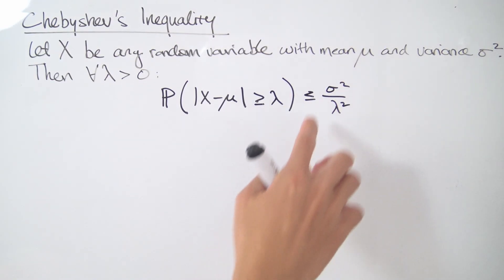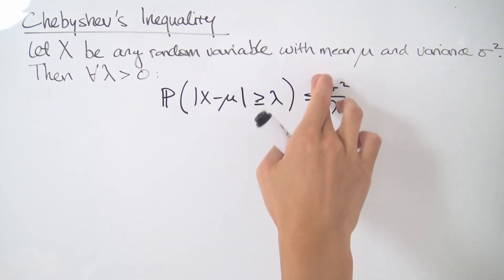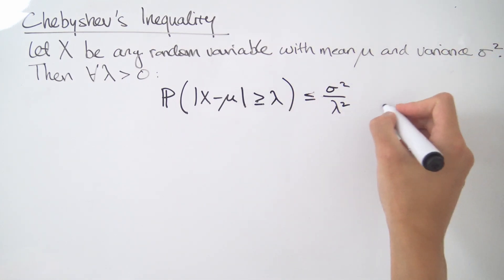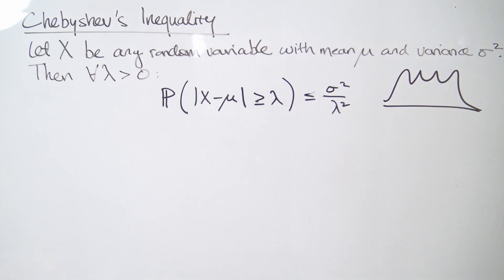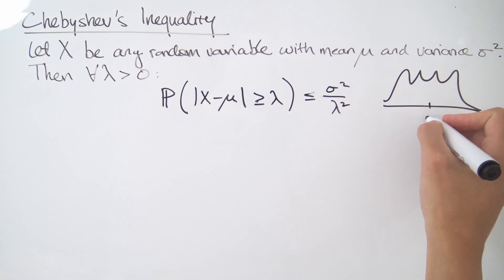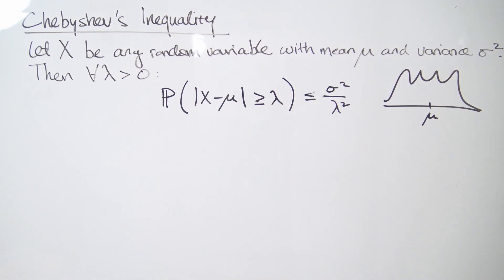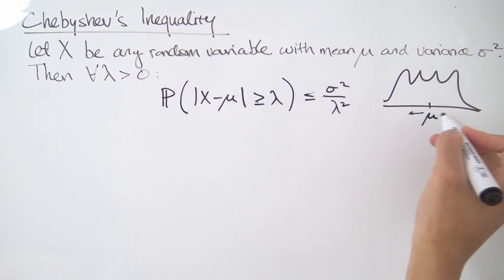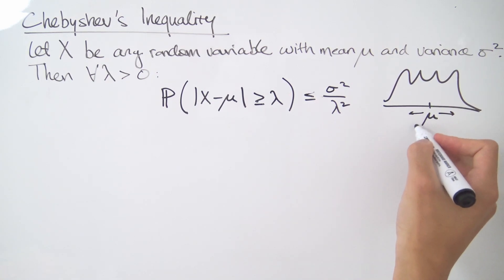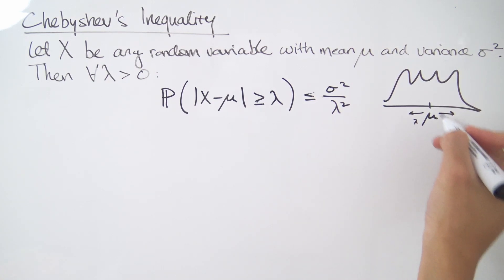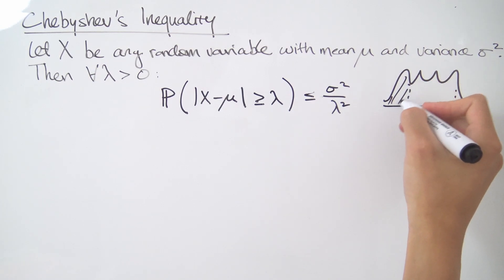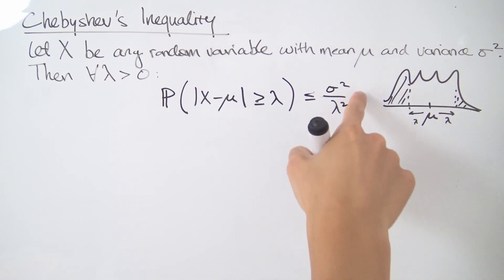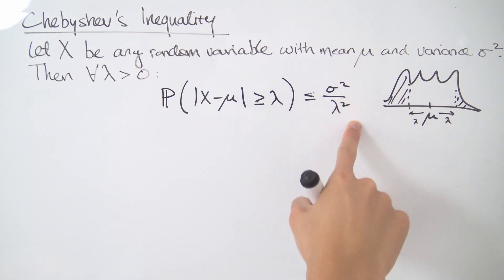We can write that as the absolute value of X minus mu being greater than or equal to some positive number lambda. So this is the probability of getting in the tail end, and we can bound this above by sigma squared over lambda squared. Let's draw a picture — say this is any distribution you want, any crazy shape, with the mean mu over here.